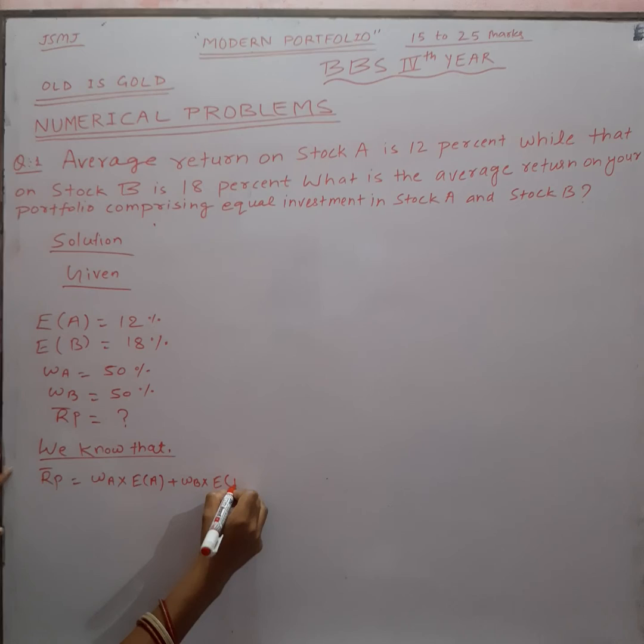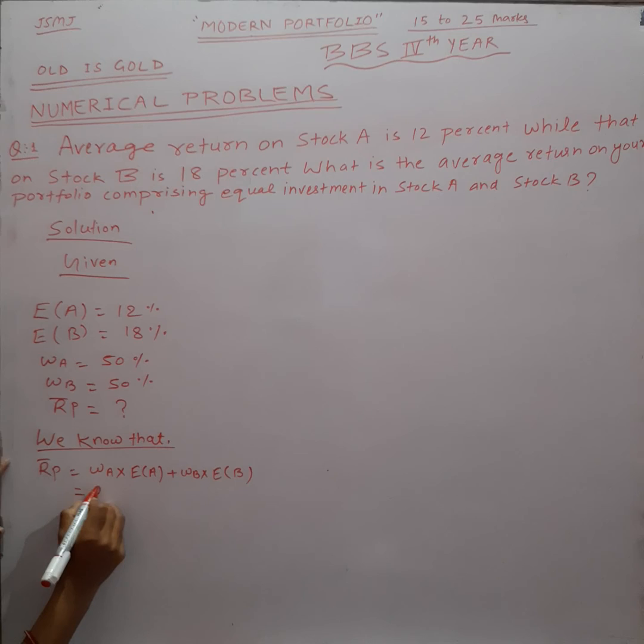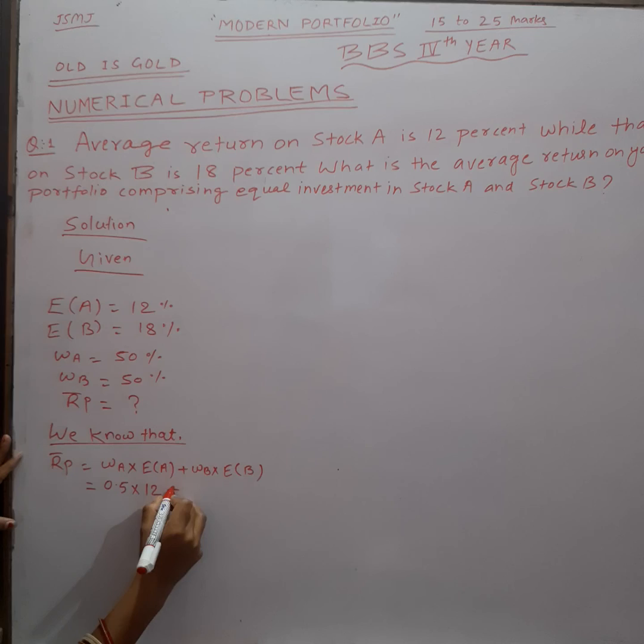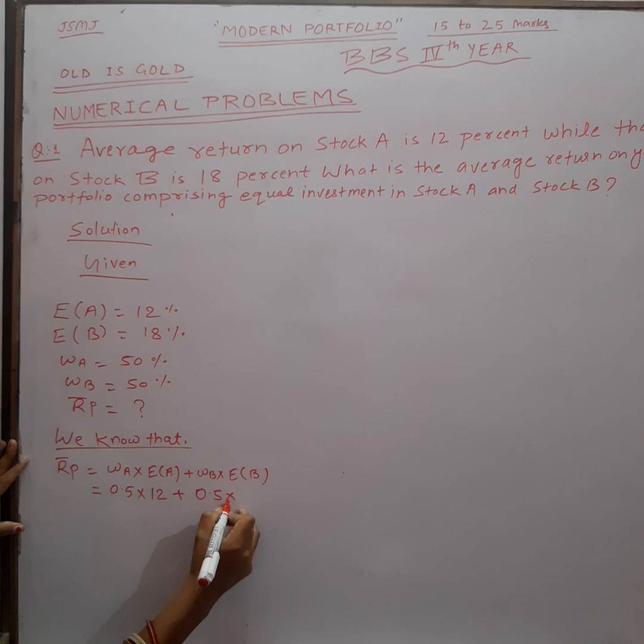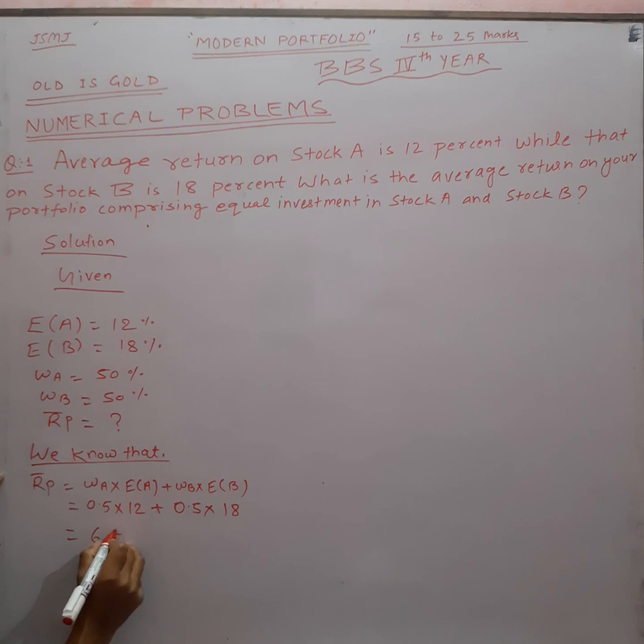So R̄p = 0.5 × 12 + 0.5 × 18, which gives us 6 plus 9, equal to 15 per cent.